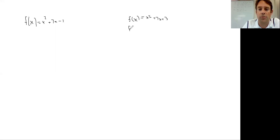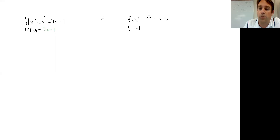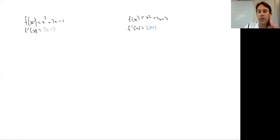Go ahead and pause the video and take the five seconds it takes to do that. You guys probably came up with 2x + 7 for both equations. The only thing that changed was the constant value — these two quadratics just had a different one. We're going to come back to this idea in a moment.